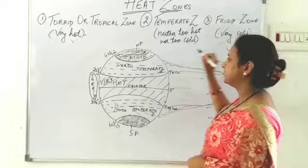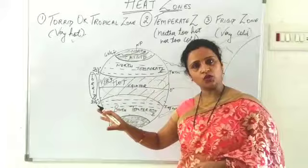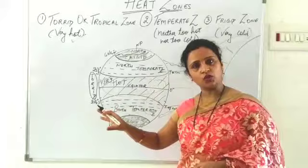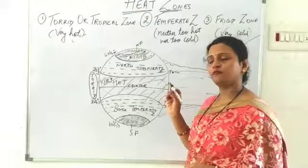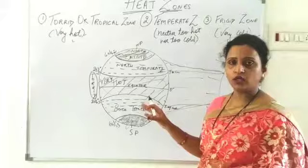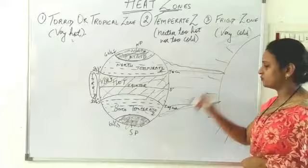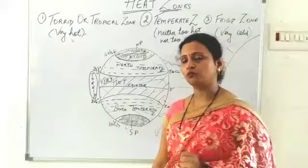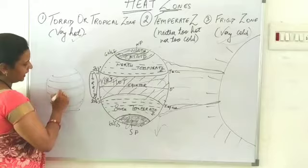In the torrid zone, vegetation is present and people live, but the temperature is very high. In the temperate zone — both north and south — a very nice amount of vegetation has formed and people are living there comfortably. But in the extreme climates of the north pole and south pole, both the Arctic and Antarctic regions are very cold. In the frigid zone, the temperature is very low and the survival of life is very very difficult. Latitudes are parallel to each other — they never intersect.